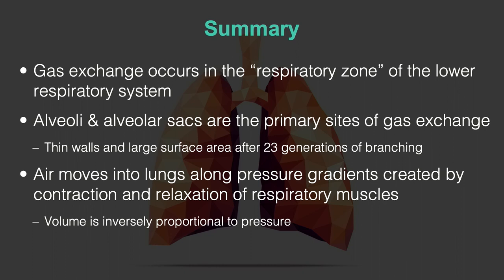The way we ventilate is by creating and manipulating pressure gradients — just like on the cardiovascular side, flow follows the pressure gradient from high to low. If we contract the respiratory muscles, we create a negative pressure or lower pressure in the lungs, and air moves in. If we let them relax and the thoracic cage drops, the diaphragm rises, pressure increases and pushes air out on exhalation. We manipulate the pressure gradient specifically to move air.